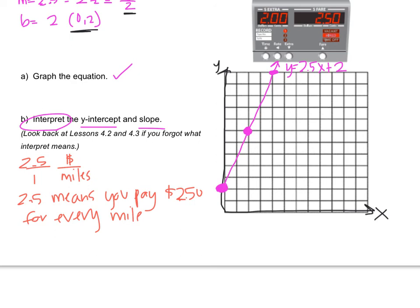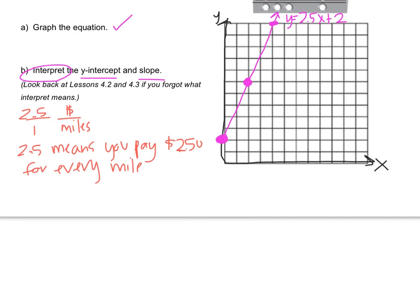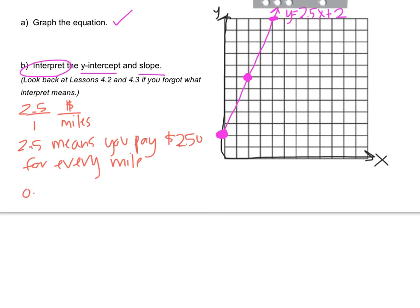Now let's do the y-intercept. The y-intercept is 0, 2. So 0, 2 means when you have 0 miles, you have $2, but that's weird. If you haven't really moved at all in a taxi, why are you paying $2? If you've ever ridden a taxi, a lot of times there's a fee just to get in the taxi, and then they start charging. So 0, 2 means before you go anywhere, you pay $2.